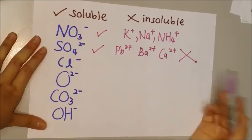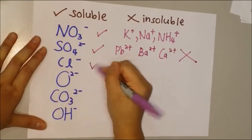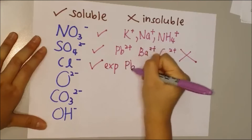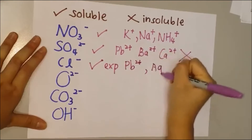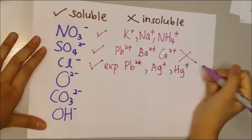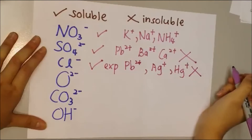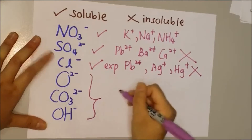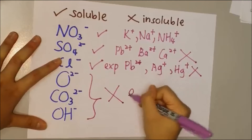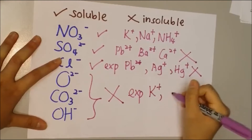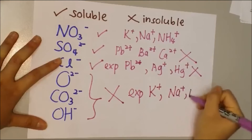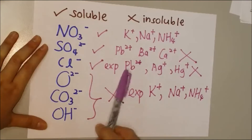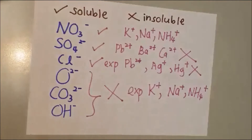You can memorize soluble sulphate exceptions with 'salt pour bath tea.' For chloride, it is also soluble except when it reacts with lithium, lead, silver, and mercury — those become insoluble salts. For oxide, carbonate, and hydroxide ions, they are all insoluble salts except when they react with potassium, sodium, and ammonium.